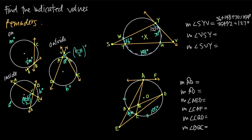Next, we find the measure of angle VSY. The vertex of this angle is outside the circle. When the vertex is outside the circle, the angle equals the larger inscribed arc minus the smaller inscribed arc, divided by 2. The larger inscribed arc is 70 degrees and the smaller is 36 degrees. So: 70 minus 36 equals 34, divided by 2 gives us 17 degrees.